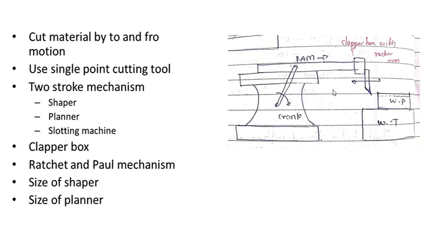The ratchet and pawl mechanism is used to feed the table in the case of a planer. After one cutting stroke is completed, the work piece is fed to the stationary tool using this ratchet and pawl mechanism. The size of a shaper is designated using the stroke length. The size of a planer is generally decided based on the maximum work piece size that the planer can accommodate on its table.